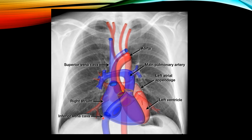The right heart border, traced from below upwards, is formed by the inferior vena cava, then the right atrium. Above the hilum comes the superior vena cava.